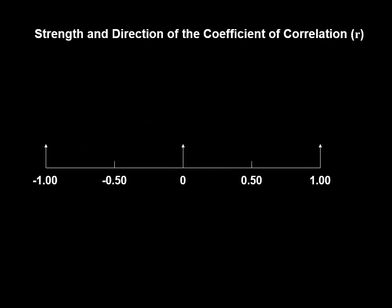The scale of the correlation coefficient goes from negative one to positive one. A value of negative one is a perfect negative correlation and positive one is a perfect positive correlation — meaning both variables move in exact proportion. In real life, you rarely see a perfect correlation coefficient unless it's a theoretical example. Whether the number is negative or positive depends on context.